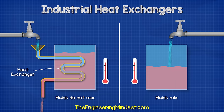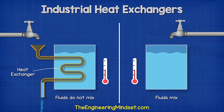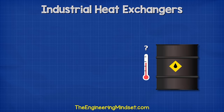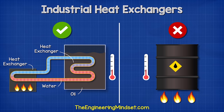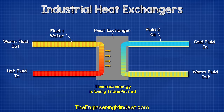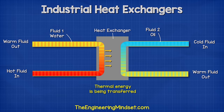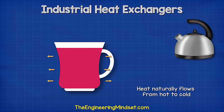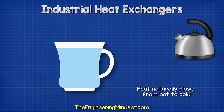A heat exchanger is simply a device used to transfer thermal energy between two fluids without them mixing. Fluids can be either a liquid or a gas, or even a mixture of either. Take oil for example — we need to increase its temperature, but we don't want to apply a flame directly to the storage unit. Instead, we boil some water and cycle this through a simple heat exchanger. The oil is cycled through the heat exchanger where it safely absorbs the heat of the water. The thermal energy transfers from the hot water, through the metal wall, and into the oil. The water and oil never meet or mix — there must be a temperature difference for heat to transfer, and heat always flows from hot to cold.